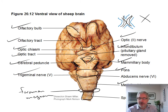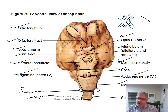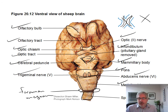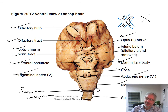Also notice there's a nerve coming off the side of the pons called the trigeminal nerve — that's cranial nerve number five. And there's another nerve called the abducens nerve — that's number six. So now you know cranial nerves one, two, five, and six: olfactory is one, optic is two, trigeminal is five, and abducens is six.